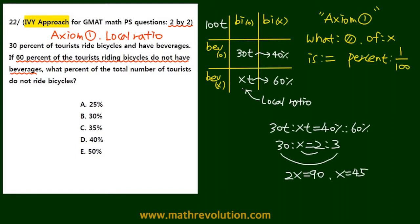So we got the value of X, which is 45. So XT is 45T. So if we add 30T and 45T, we get 75T. So the number of tourists riding bicycles is 75T. Then 100T minus 75T will be 25T. So 25T is the number of tourists who are not riding bicycles.